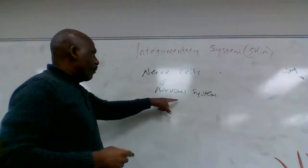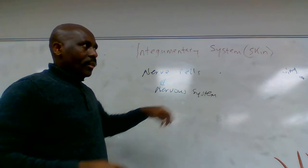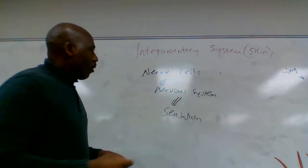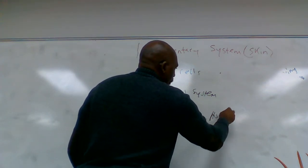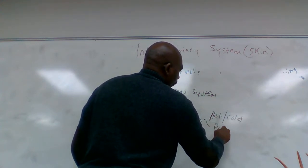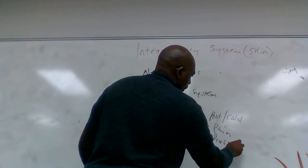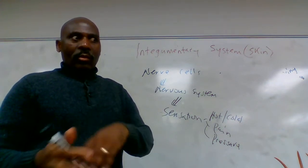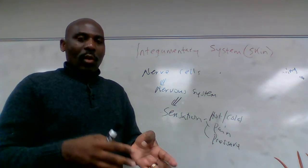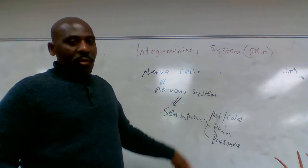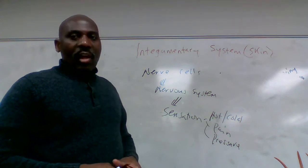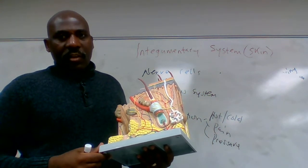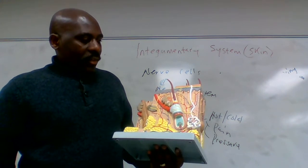The nerve cells are part of the nervous system in the skin, and their function is sensation. They enable you to feel hot or cold, pain, pressure, and so on. If you are able to feel pain, warmth, cold, or pressure on your body, that is because of the nerve cells and their nerve fibers present in our skin.